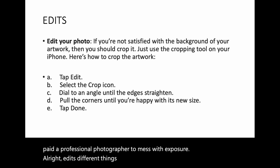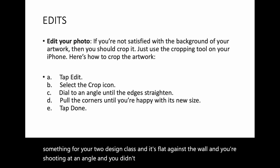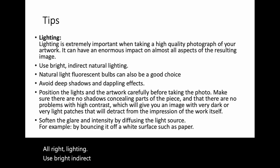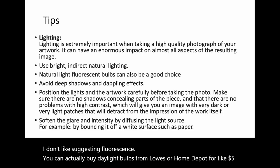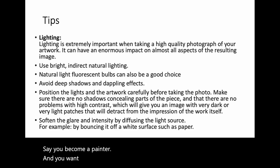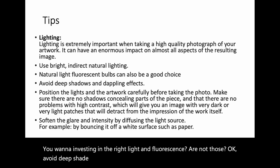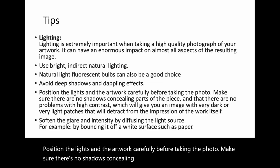Cropping — you can change the angle, especially if you're photographing something flat. Say you've done something for your 2D design class and it's flat against the wall but you shot it at an angle and it flares out at the bottom. You can adjust that on your phone. Use bright indirect natural lighting. You can buy daylight bulbs from Lowe's or Home Depot for about $5 a bulb. Avoid deep shadows and dappling effects unless you're going for mood. Position the lights and the artwork carefully before taking the photo — make sure there's no shadows concealing parts of the piece.